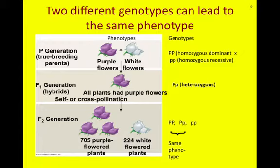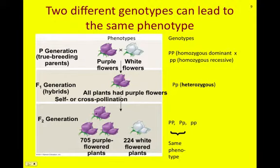Two different genotypes can lead to the same phenotype. All the F1s were heterozygous, meaning they had one dominant and one recessive allele. If you cross them among themselves — self or cross pollinate these plants that now have purple flowers — what you will see is that you will get mostly purple flowered plants, but you will also get a set of white flowered plants.